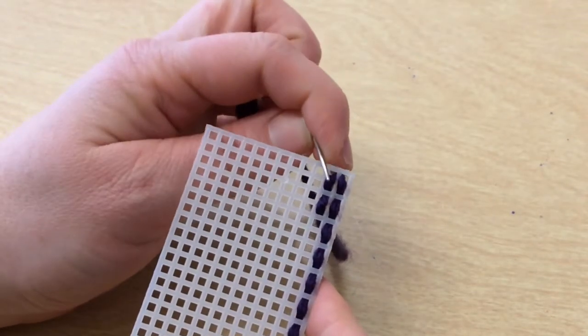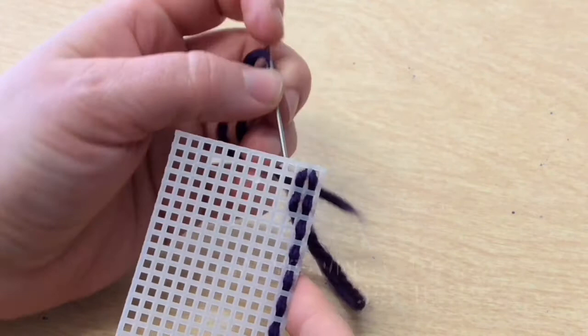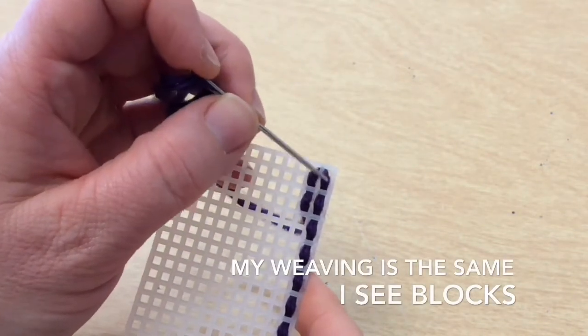I just finished my first row and I started coming back down the second row, but I noticed that my weaving is the same. I'm seeing blocks.